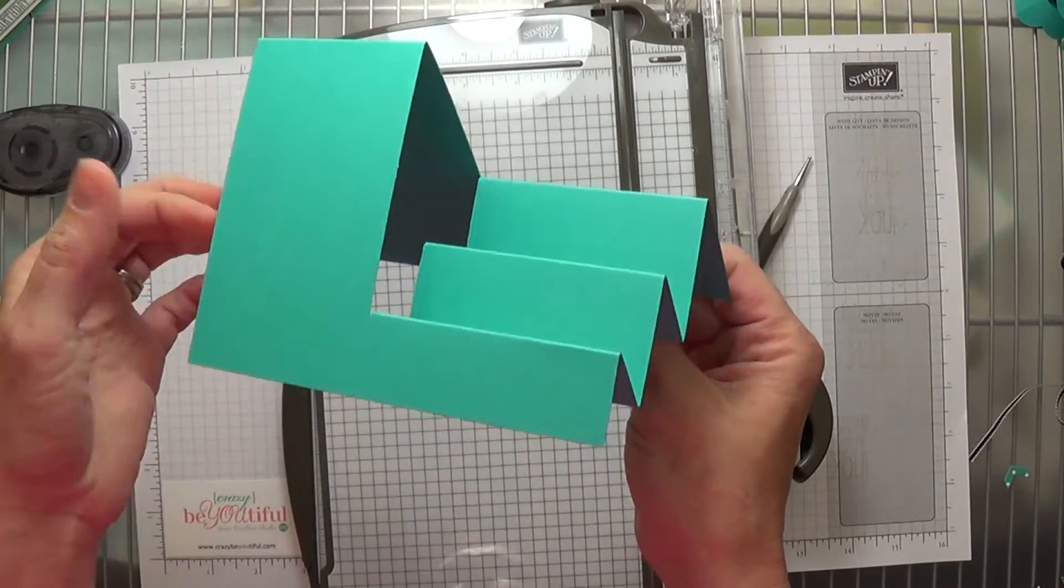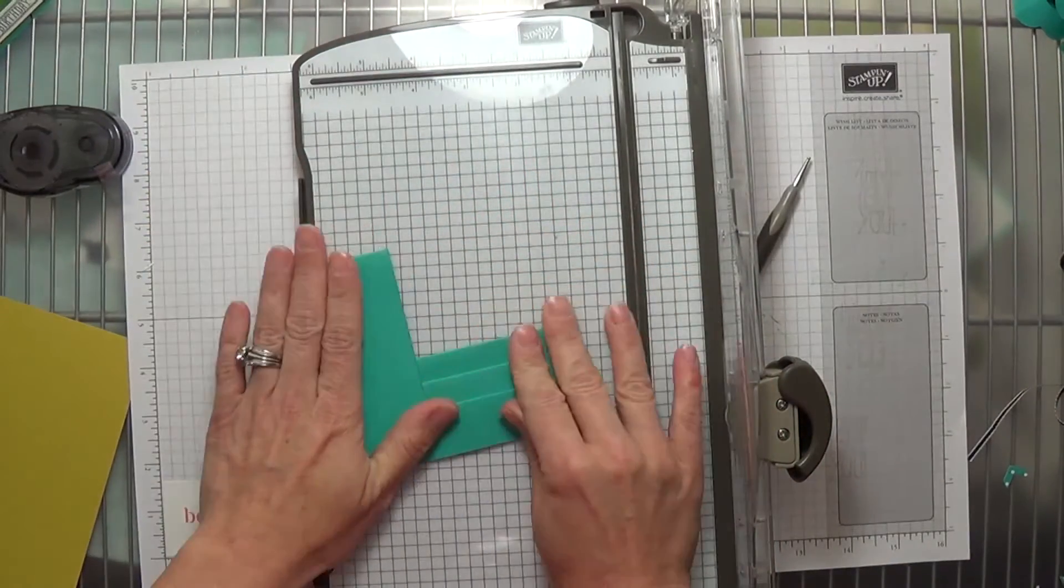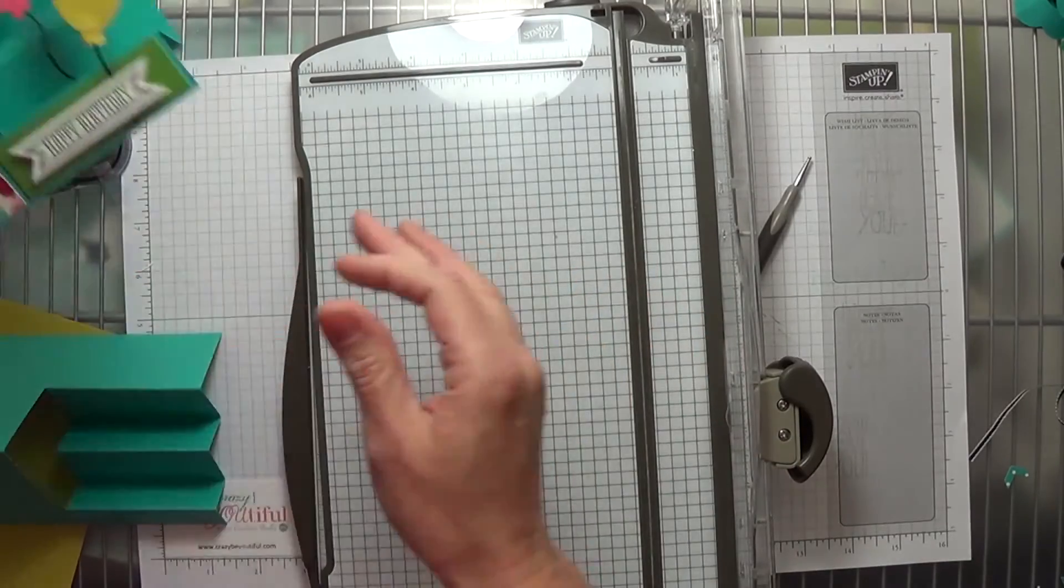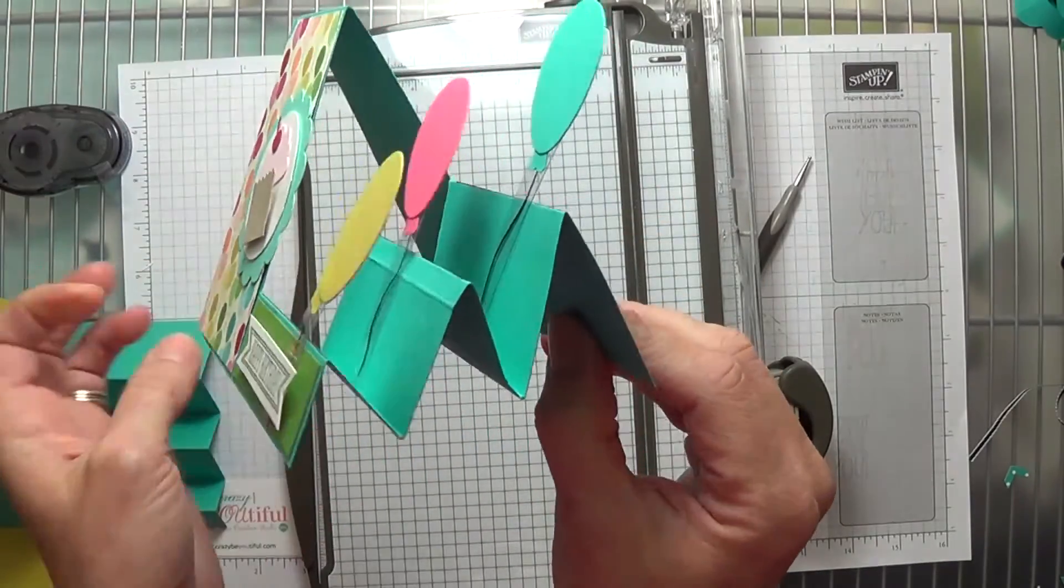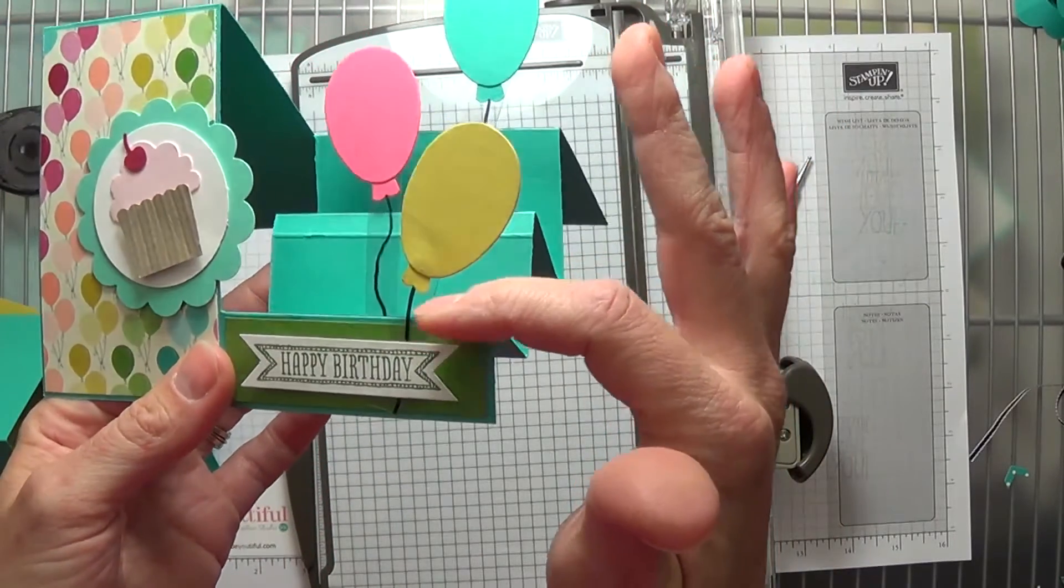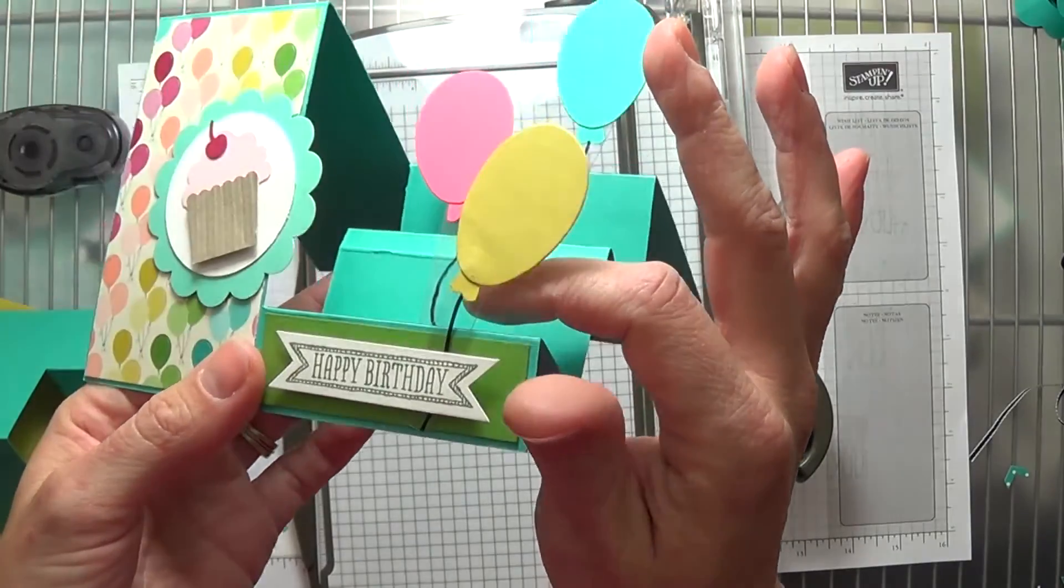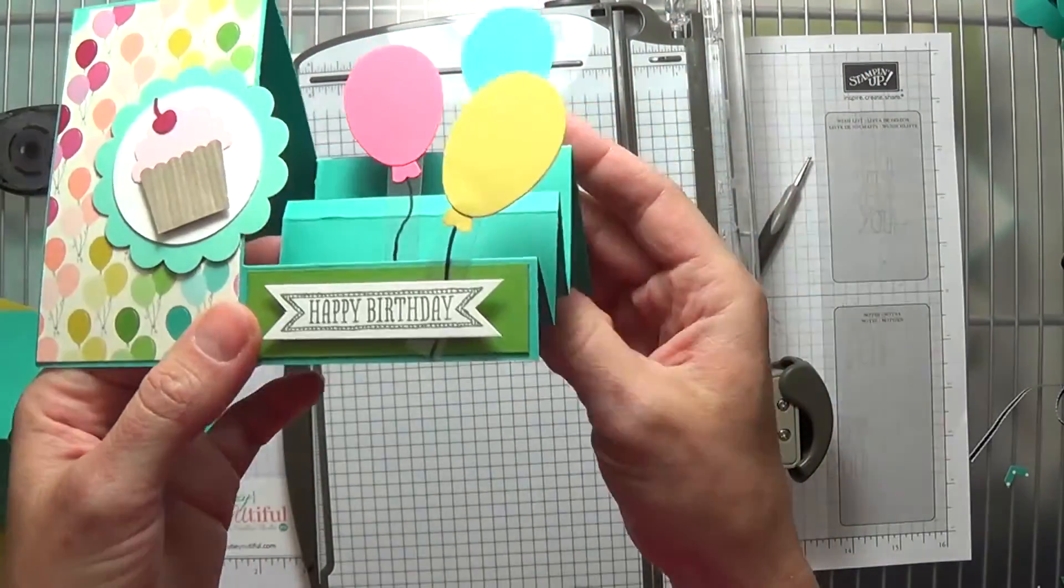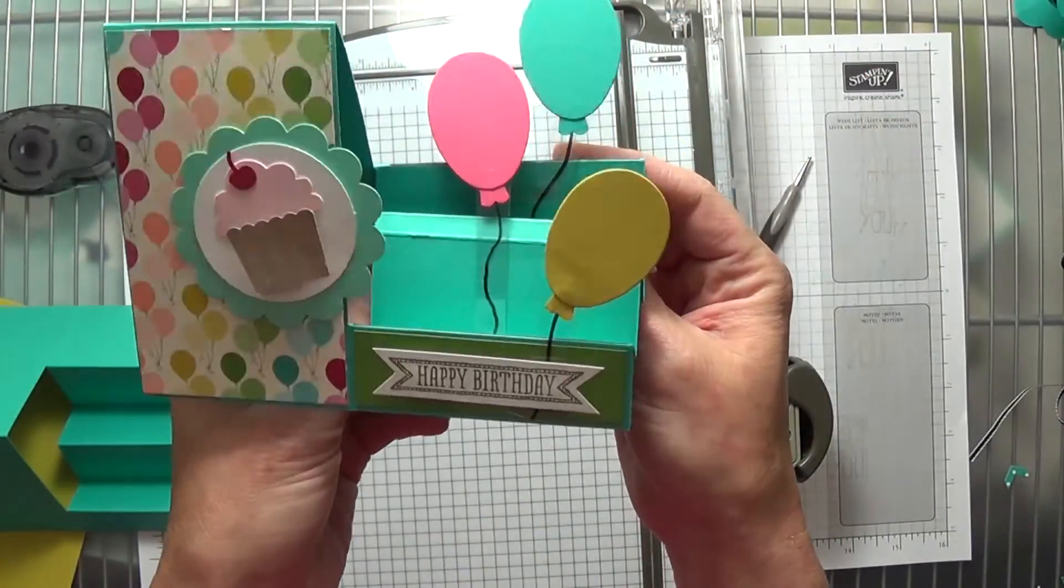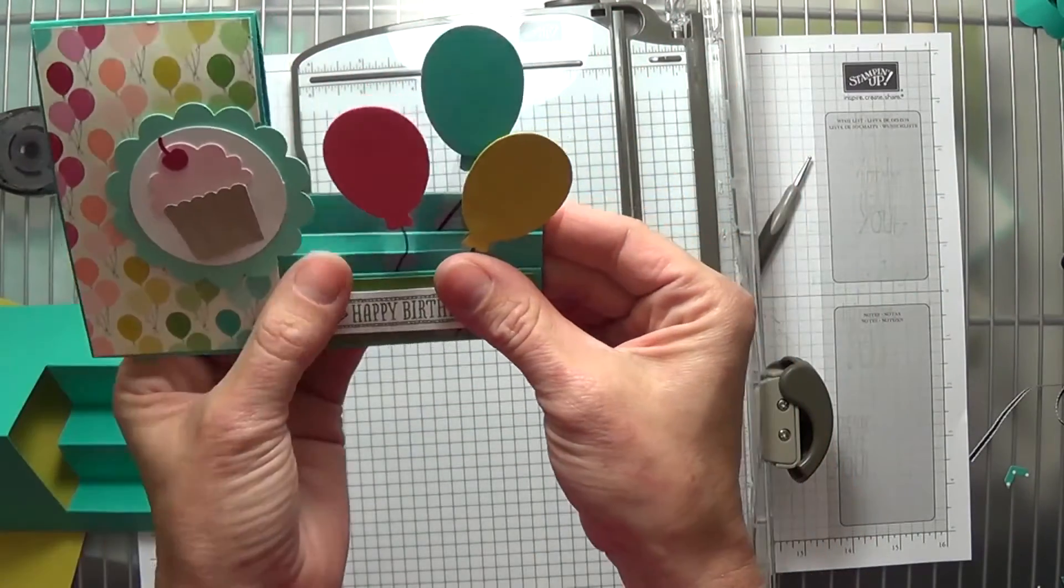This will be a great card base for a stair-step card. The sample that I have, I actually messed up a couple times, but you can see how I just have my little balloons here on a piece of clear window sheet. That really gives a fun effect for all three layers, all three steps.